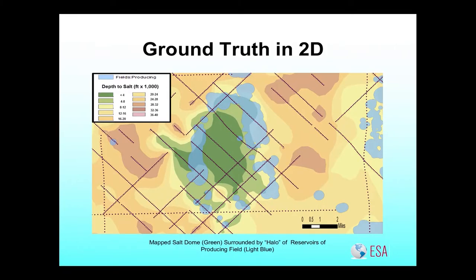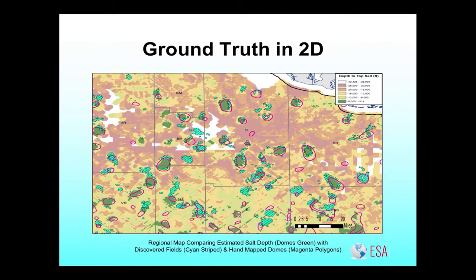Here's an example where the blue polygons are oil and gas reservoirs surrounding the salt domes, and the green is a high in our mapping of the salt dome. We see a good correspondence, and that makes us feel good because we have a halo of reservoirs around it. Those purple polygons were the result of a project where scientists in the 1990s — coincident with the vintage of our data — went through and hand-mapped salt dome locations off of seismic. Again, there's a good spatial correlation.